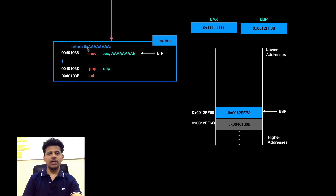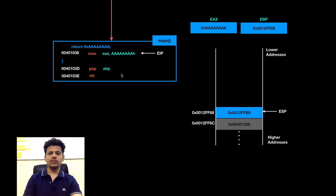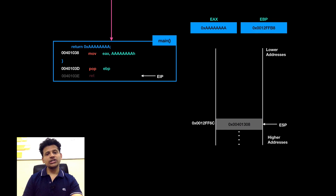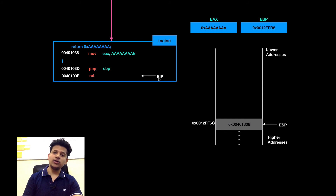Next C statement is it returned with the age — we will move age into the EAX. Next C statement is main is ending here: we will take the value pointed by the ESP, move that into the EBP. Then we will take the value pointed by the ESP and move that into the EIP, and EIP will begin its execution from there.